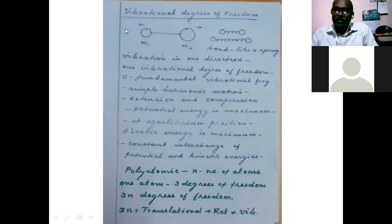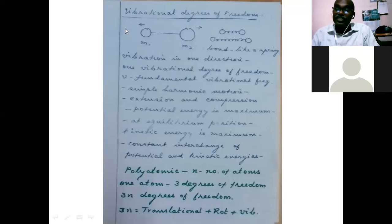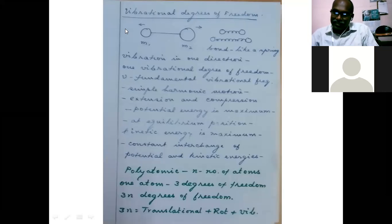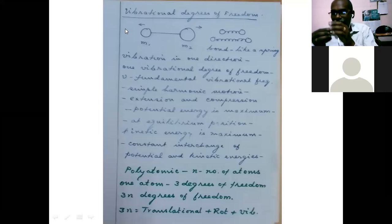In quantum mechanics, this is expressed as the Hamiltonian function: H = T + V, where T is the kinetic energy operator, V is the potential energy operator, and H is the total energy operator called the Hamiltonian operator. So the total energy remains constant — sometimes totally potential, sometimes totally kinetic, and in between it is partially kinetic and partially potential, but the sum is always constant.